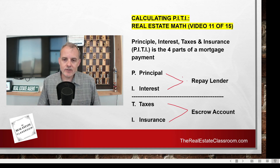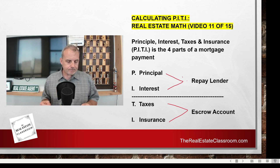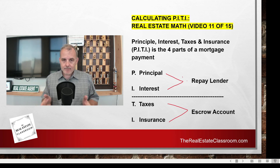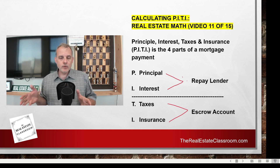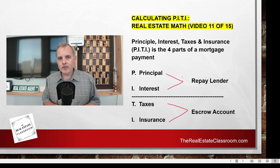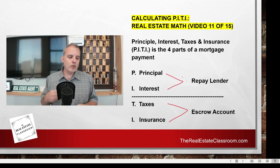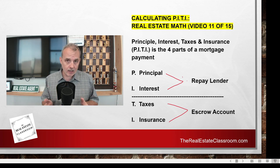The other part is taxes and insurance. Every month you pay one-twelfth of the estimated tax payment and one-twelfth of the estimated insurance payment, and that money goes into what we call an escrow account. It's an account set up by your lender where that money accumulates every month when you make your mortgage payments, so when your annual property taxes and annual insurance premium come due, there's money there to pay those bills.